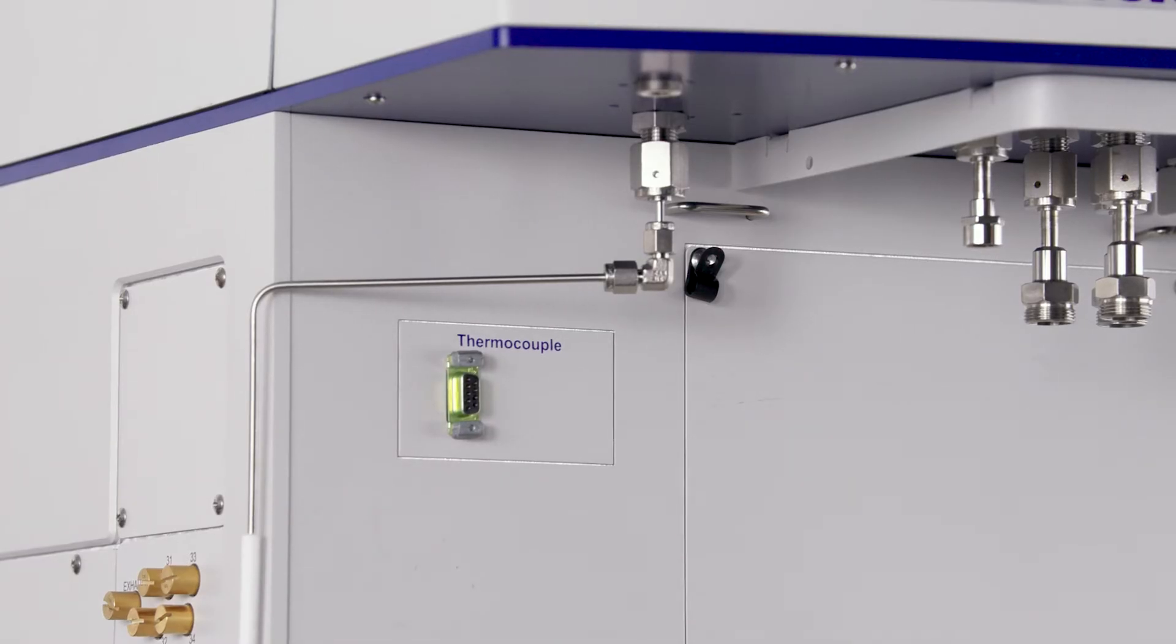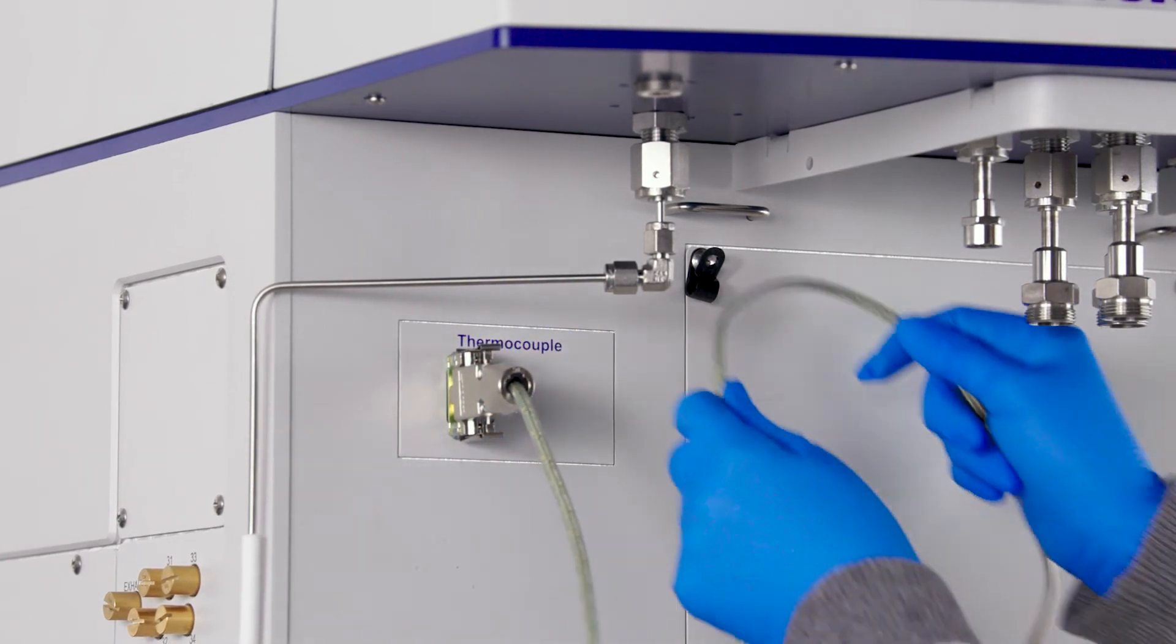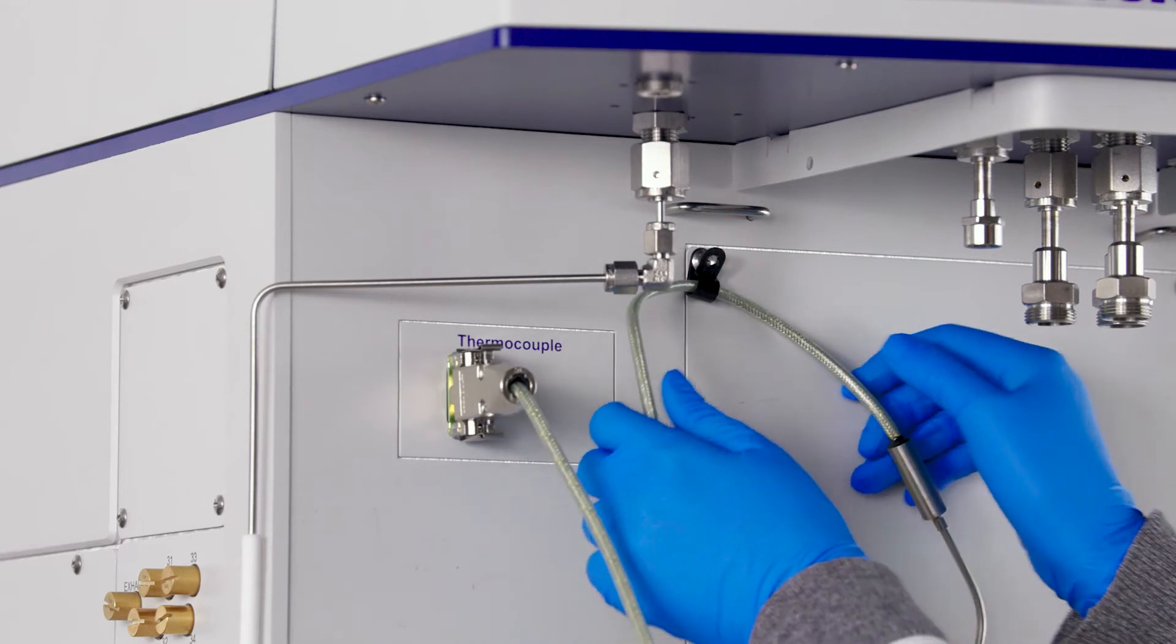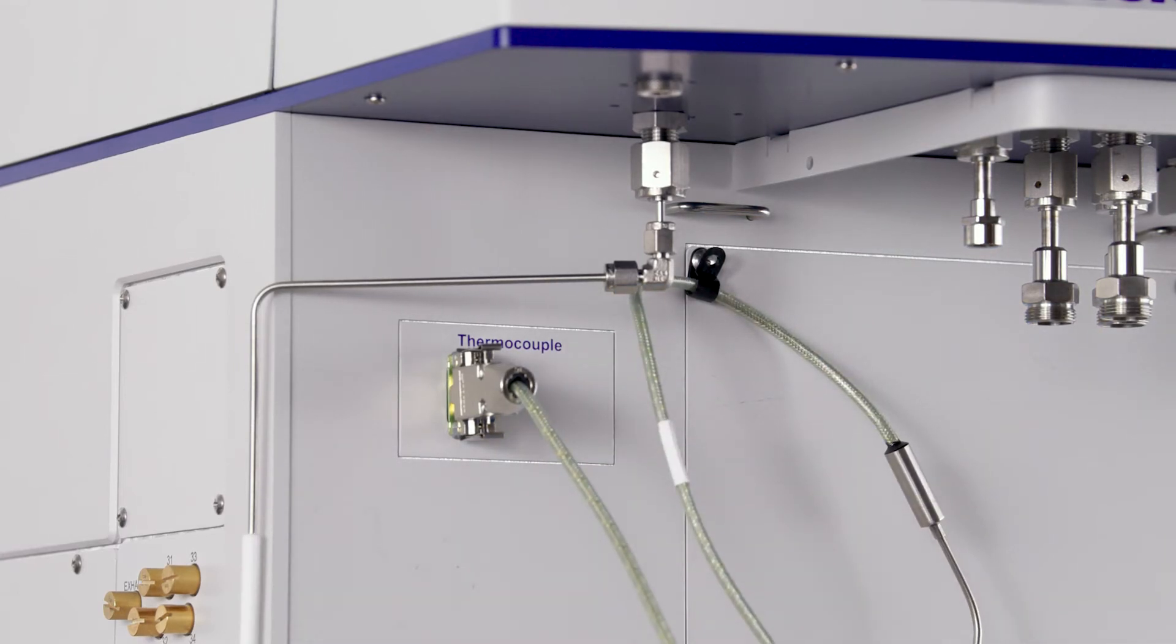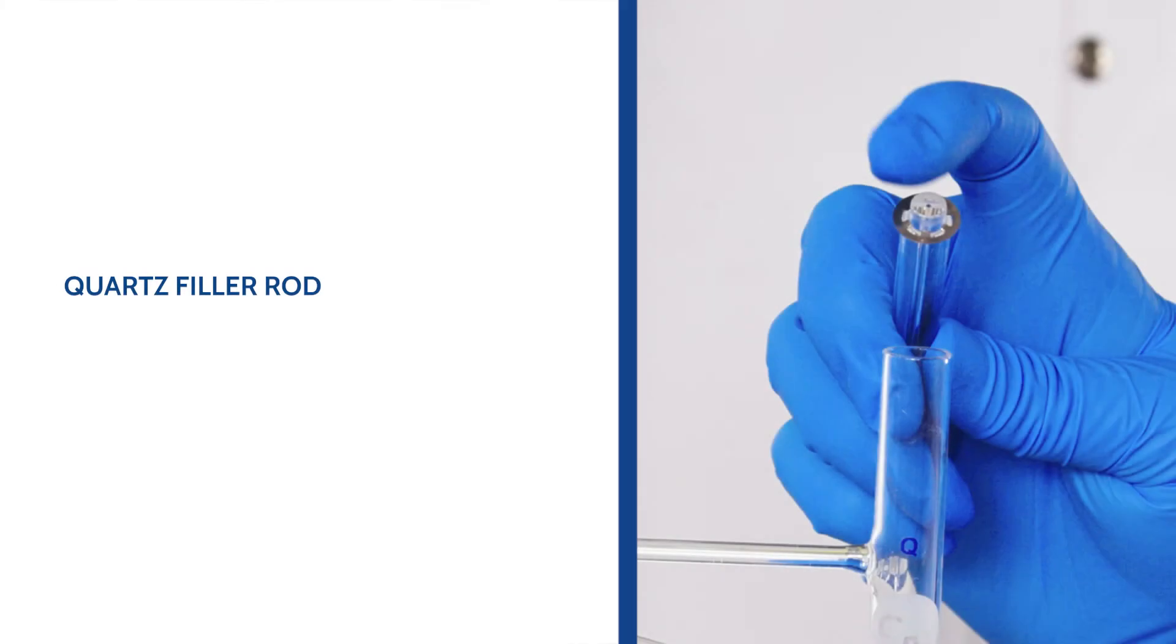Attach the sample thermocouple to the connector located on the upper left corner of the instrument. Secure the thermocouple in place using the clip that is attached on the front panel of the instrument. Now the sample tube is ready to be attached to the instrument.